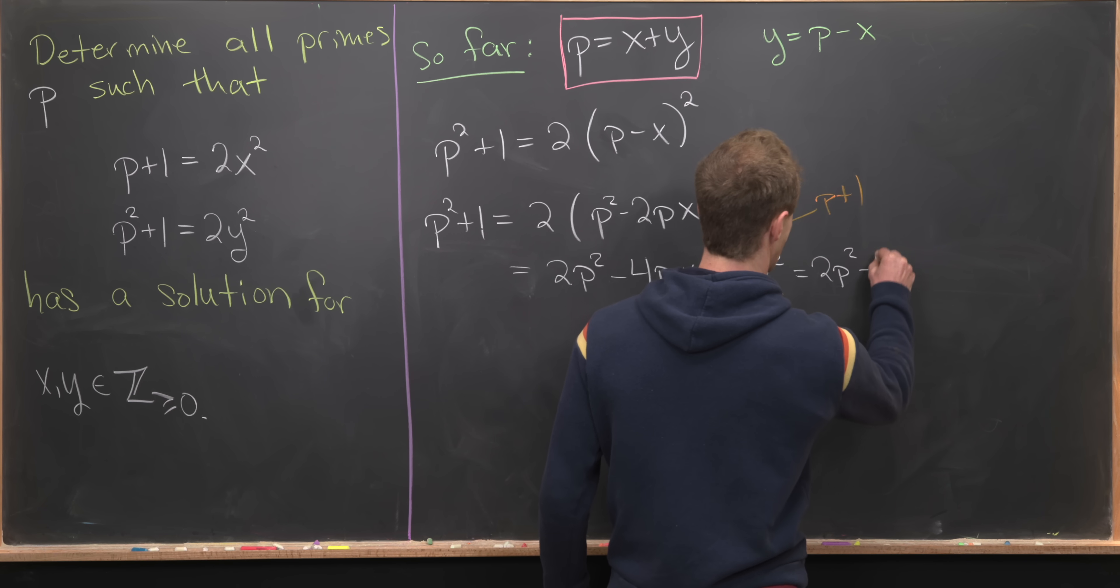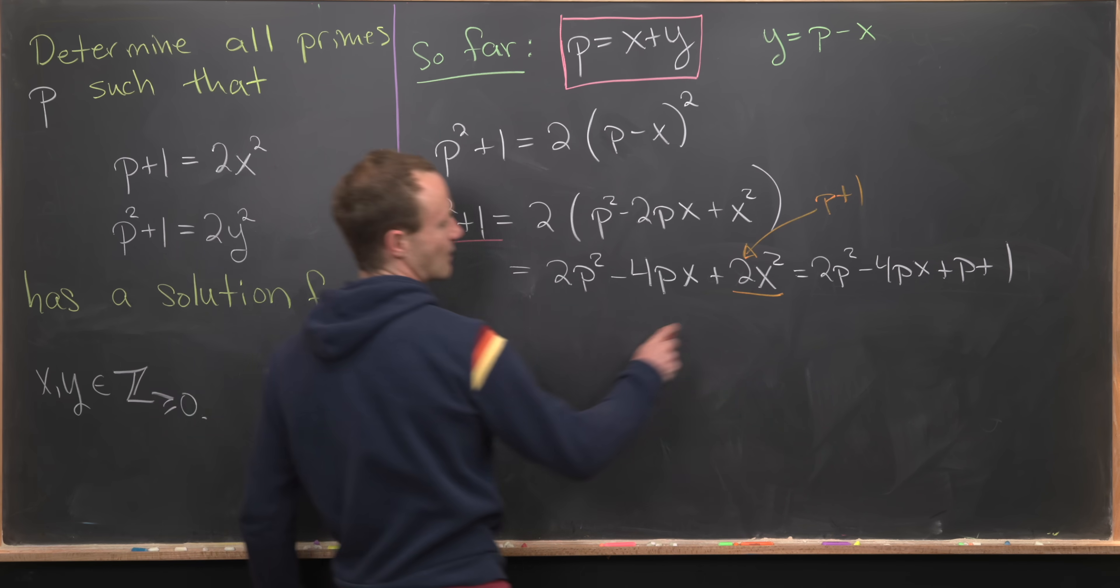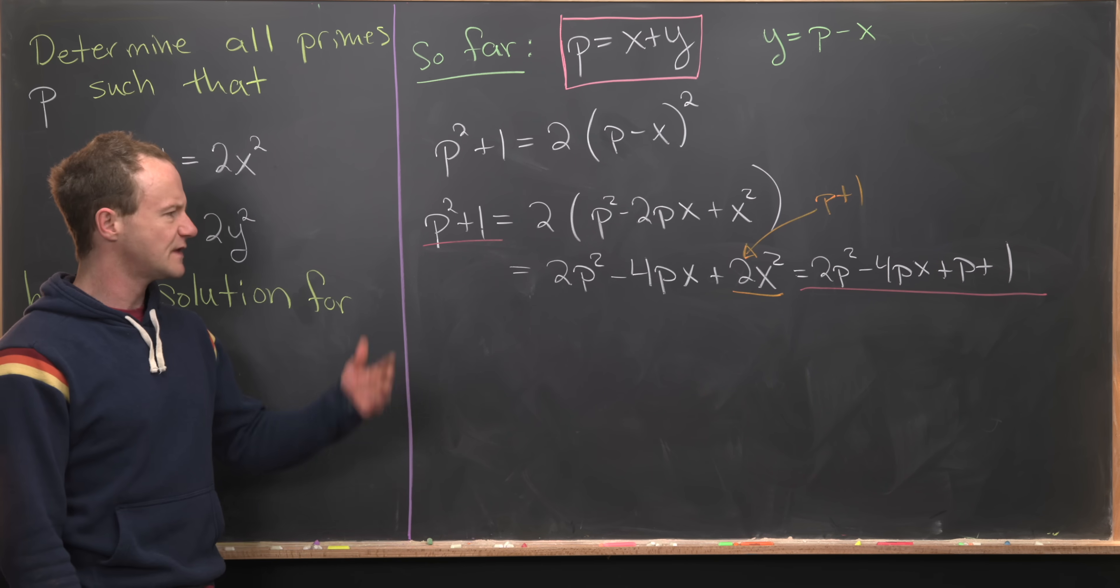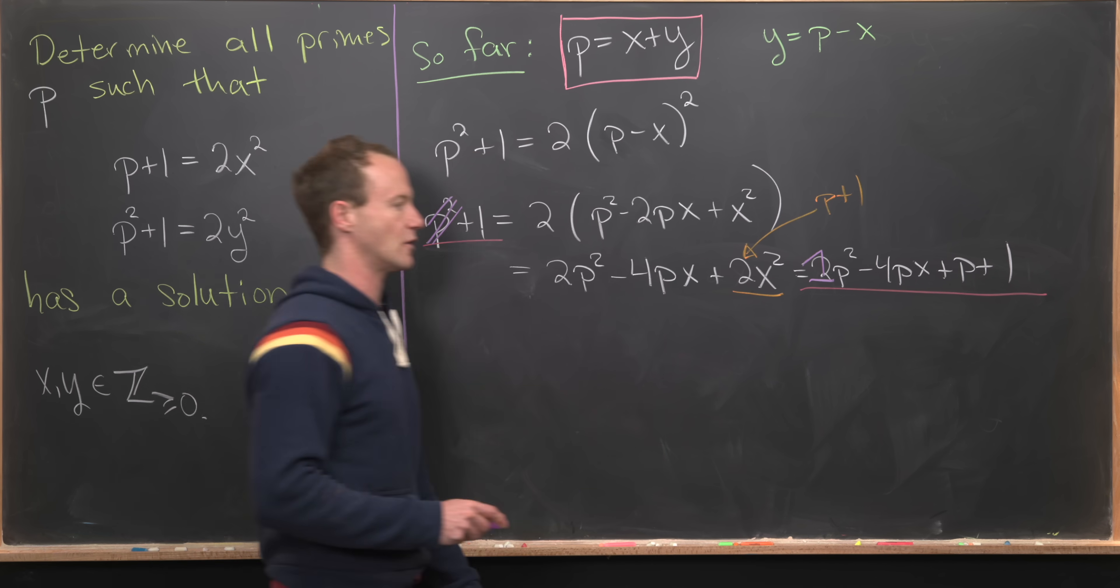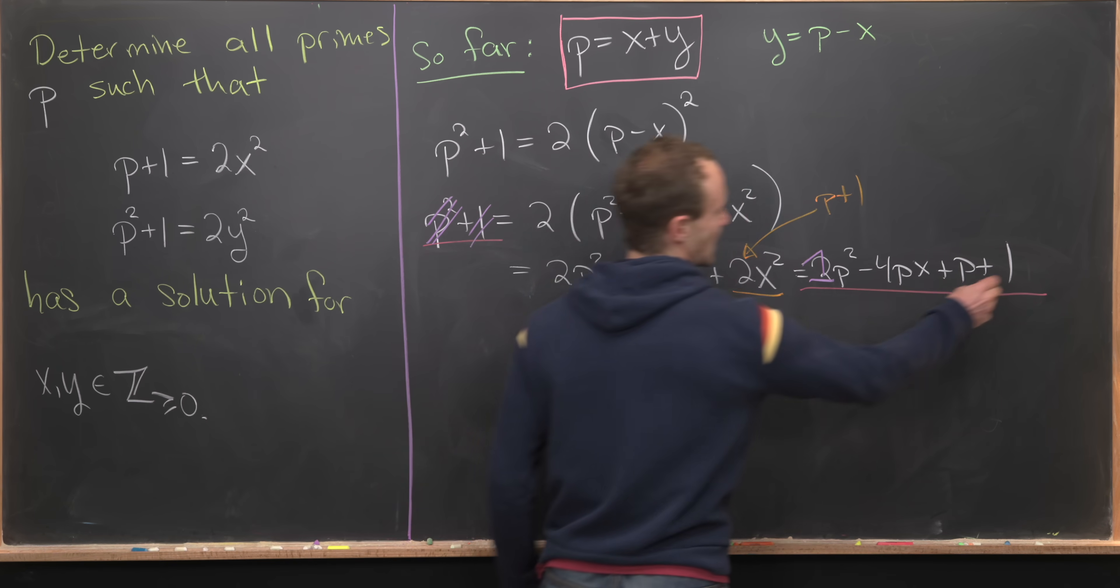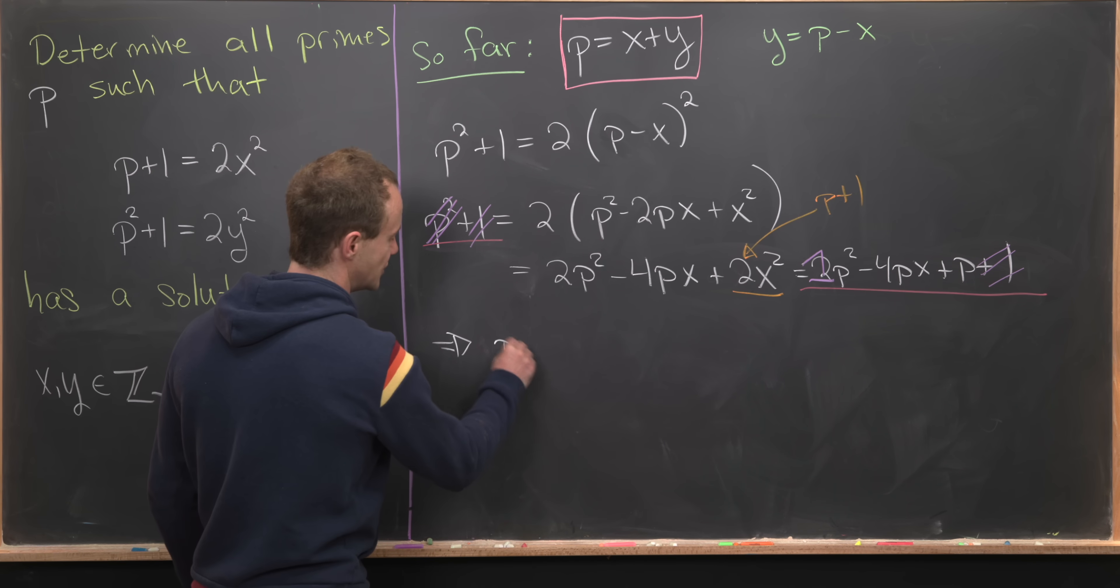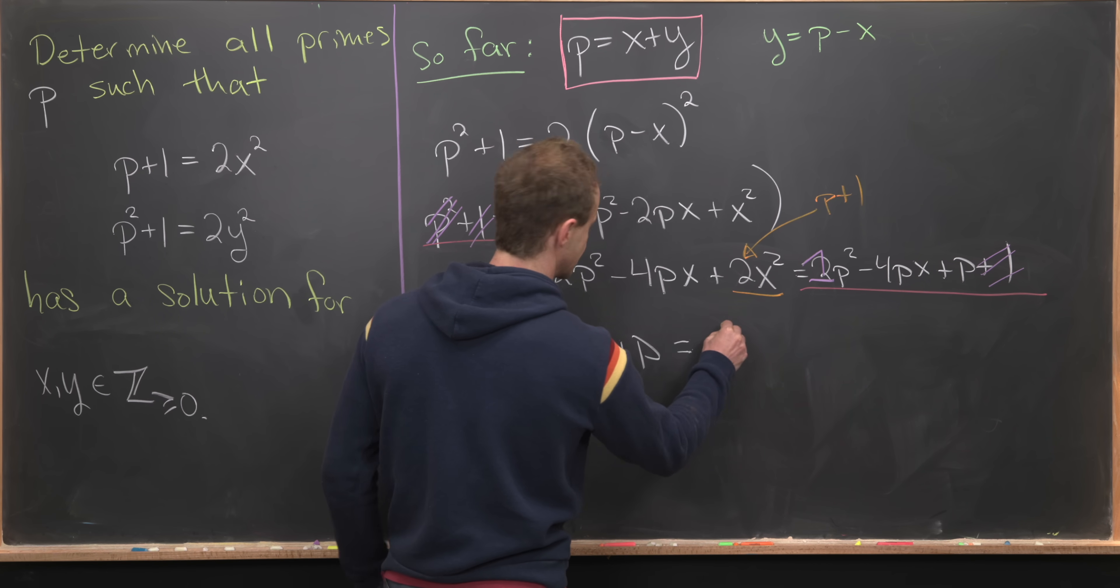That will give us an equation that is only quadratic in p but linear in x. We'll have 2p²−4px+p+1. Now we'll solve this equation for p in terms of x by getting everything to one side. The p² terms subtract off leaving p²−4px+p equals 0.